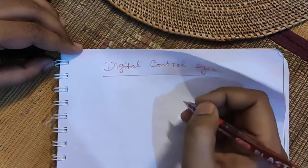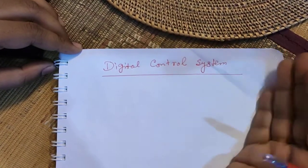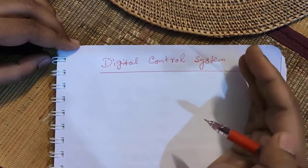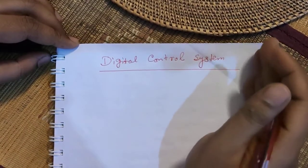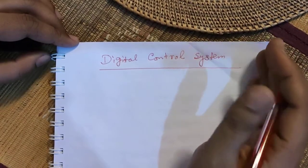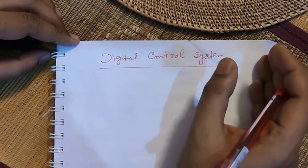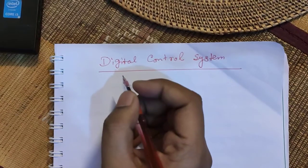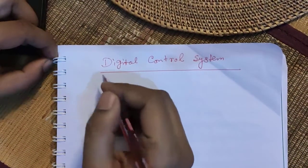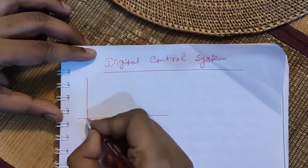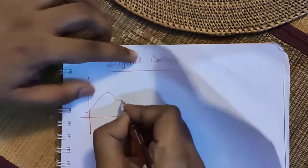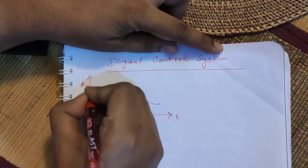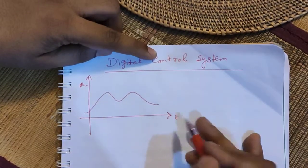So we need to learn how we can apply our control theory in the digital domain. We need to adapt different mathematical tools to explain the system and different mathematical models to control those digital systems. First, we need to understand what a digital system is. In an analog system, if we have a signal, this is the time axis and this is the amplitude — this is a continuous signal in the time domain.